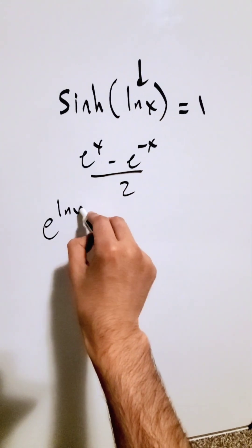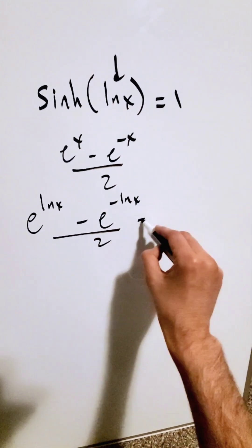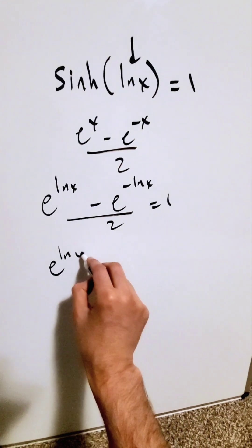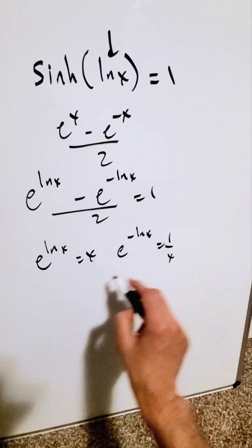I have e exponent natural log x minus e exponent minus natural log x divided by 2 is equal to 1. Remember these two fundamental identities: e exponent natural log x is always equal to x and e exponent minus natural log x is equal to 1 over x.